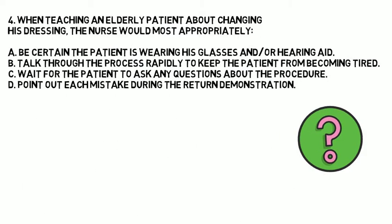Question 4. When teaching an elderly patient about changing his dressing, the nurse would most appropriately: A) Be certain the patient is wearing his glasses and/or hearing aid. B) Talk through the process rapidly to keep the patient from becoming tired. C) Wait for the patient to ask any questions about the procedure. D) Point out each mistake during the return demonstration. The correct answer is A. Whenever you're going to teach an elderly patient, make sure they have their device or item on. Otherwise, you're not really going to be effectively teaching them because they're not going to retain any information if they can't see or hear you.